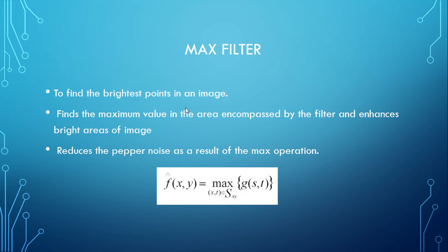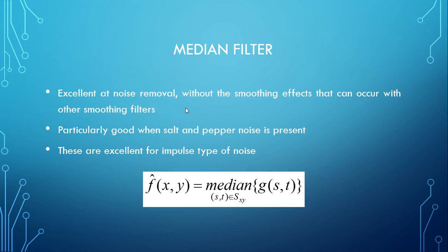MaxFilter finds the brightest points in an image. It finds the maximum value in the area encompassed by the filter and enhances the bright areas of the image. It reduces pepper noise as a result. If the MinFilter and MaxFilter are used together, the salt and pepper noise can be eliminated as a whole. The formula for MaxFilter is shown on screen.